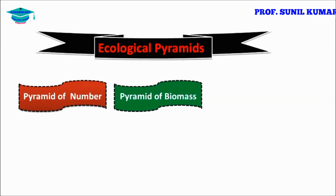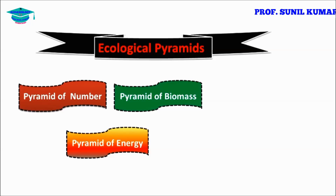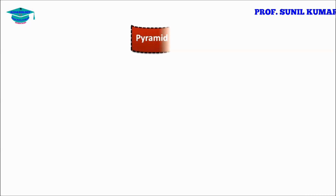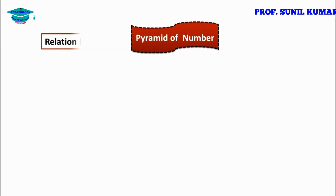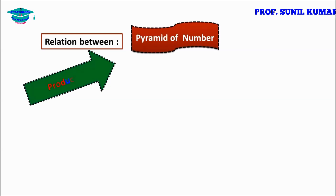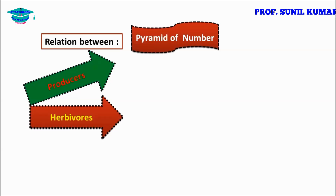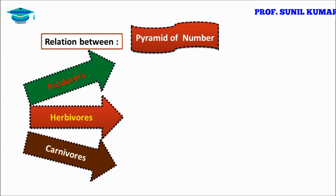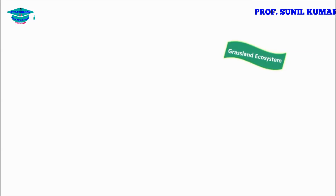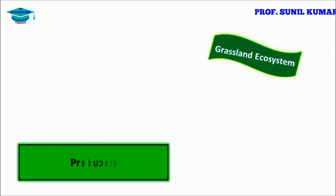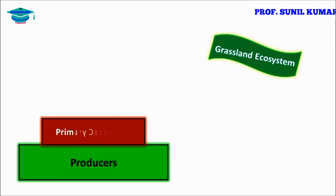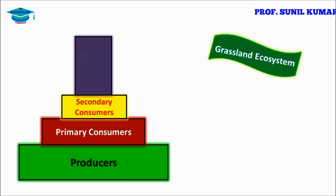There are three types of pyramids: pyramid of number, pyramid of biomass, and pyramid of energy. The pyramid of number is purely based on the relation between producers, herbivores, and carnivores with respect to number. In the grassland ecosystem, there are more producers, then primary consumers, then secondary consumers, and least will be tertiary consumers.